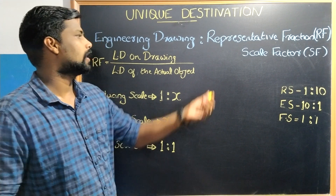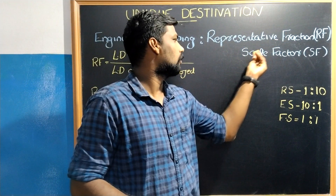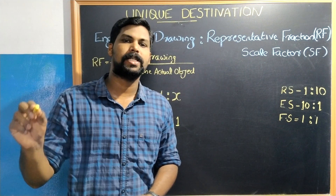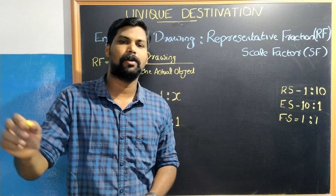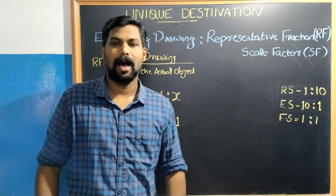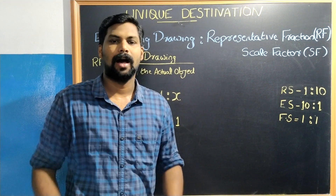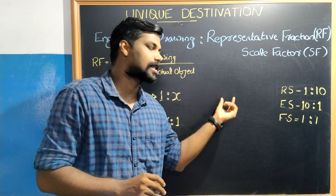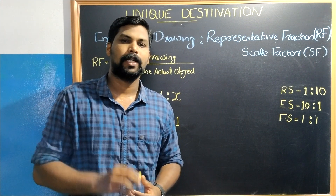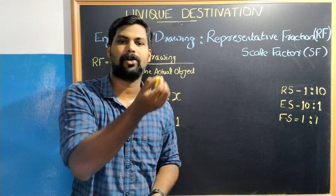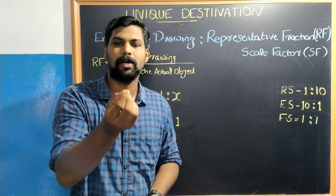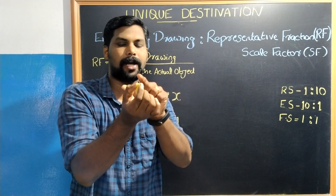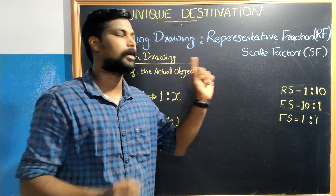We are going to discuss the representative fraction or scale factor. We can come to a large building in the drawing sheet — we can reduce the size of a large object, or we can enlarge the drawing sheet to see the size of a minute object.